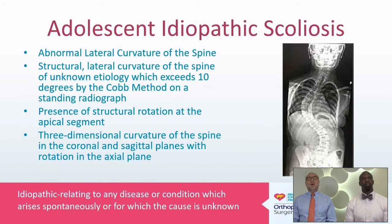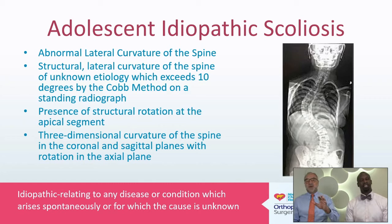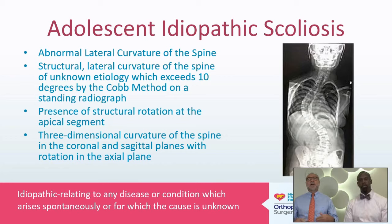So what is adolescent idiopathic scoliosis? In its simplest form, it's just a lateral curvature of the spine. When you look at someone's spine from either the front or the back, it's usually straight. But if you get a lateral curve, we call that scoliosis. The word 'idiopathic' in medicine just means that we don't know exactly why this has happened — we're ignorant of the exact cause.